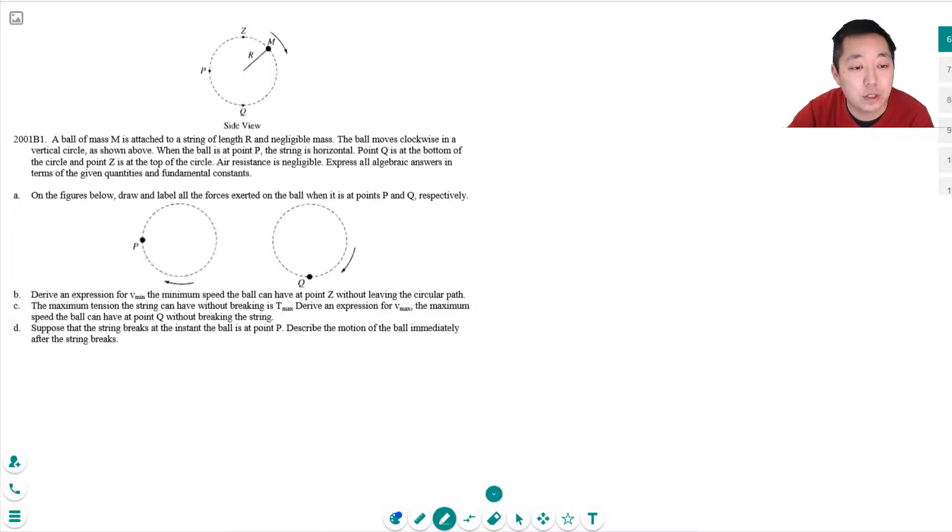A ball of mass M is attached to a string of length R, a negligible mass. The ball moves clockwise in a vertical circle as shown above. When the ball is at point P, the string is horizontal. Point Q is at the bottom of the circle and point Z at the top of the circle. Air resistance is negligible. Express all algebraic answers in terms of given quantities and fundamental constants.